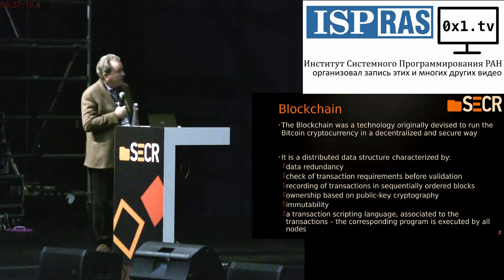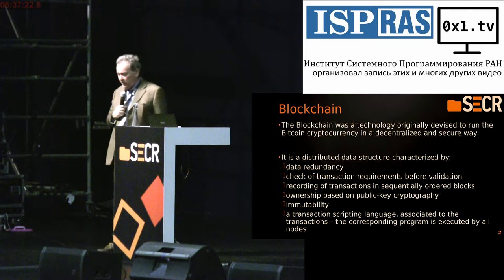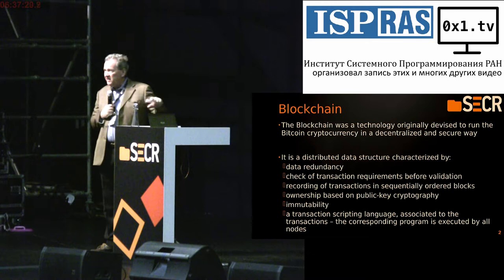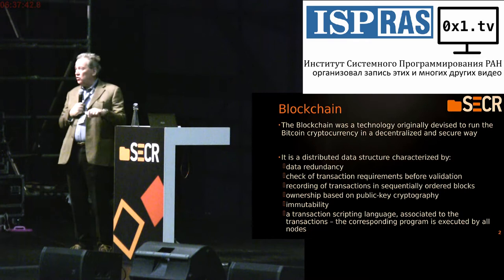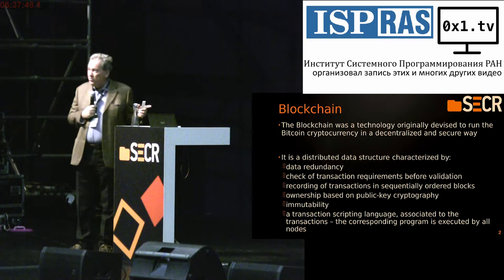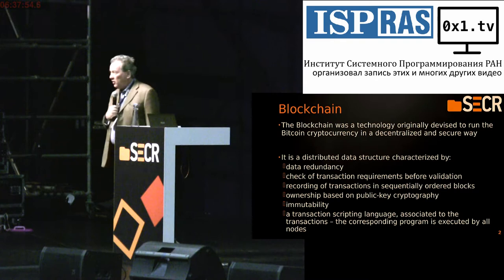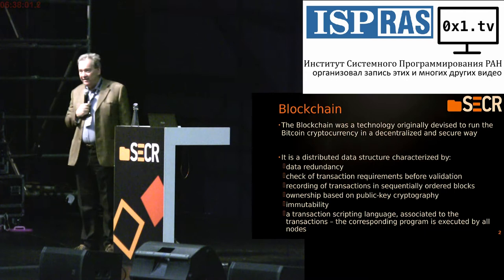Basically, a blockchain is a distributed data structure, which is characterized by data redundancy, meaning that every node of the network holds a copy of the blockchain. The blockchain is modified through transactions, and every node, when it receives a transaction, checks the transaction, and if the transaction is correct, the transaction is communicated to the network. Then the accepted transactions are recorded in blocks — a block could have 10, 20, or maybe even 2,000 transactions.